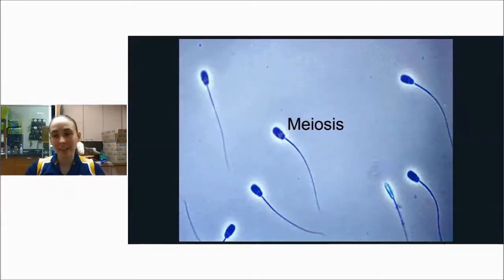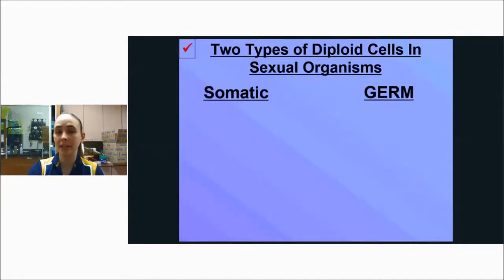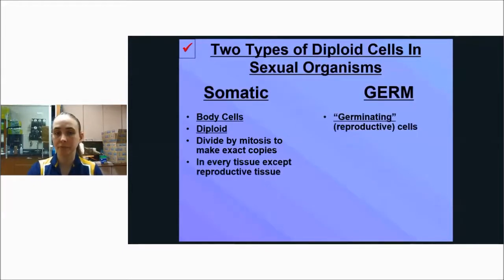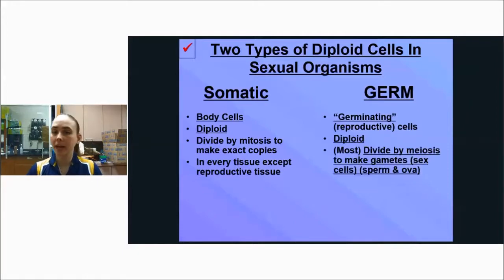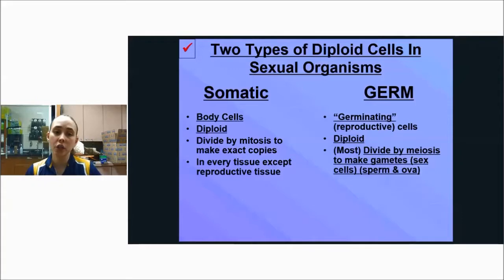Last but not least in the cell division series is meiosis. There are two different types of diploid cells in sexual organisms: somatic cells and germ cells. Somatic cells are your body cells. They are diploid, meaning they have a full set of chromosomes — two copies of each of 23, so 46 total. They divide by mitosis to make exact copies of themselves, and they are in every tissue except reproductive tissue.